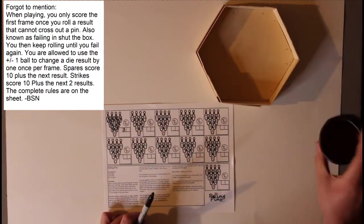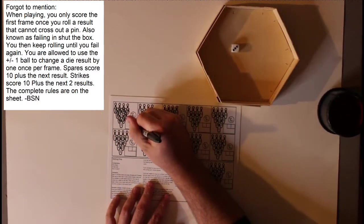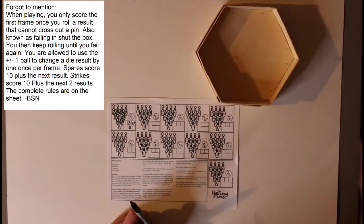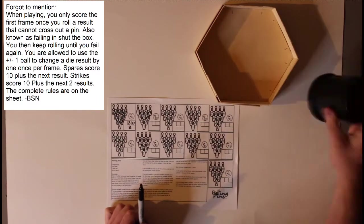And so, like in Shut the Box, once you get all the upper numbers done, you're allowed to roll only one single die until you can get your strike or spare.